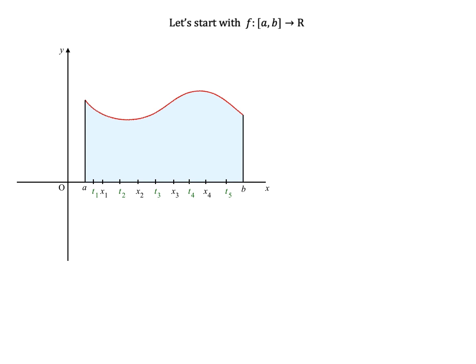For example, within the interval from x3 to x4, we have the intermediary value t4. To t4 corresponds f of t4, with a projection on the y-axis. We can then construct a rectangle around these values, with x4 minus x3 being its width and f of t4 being its length.